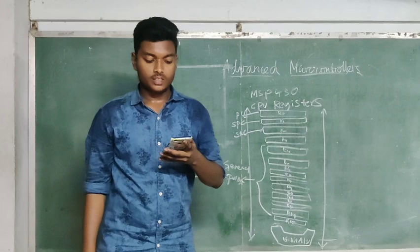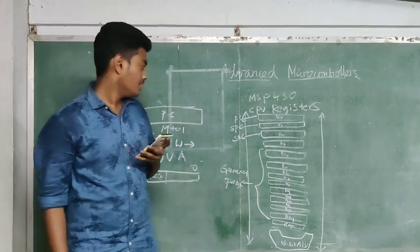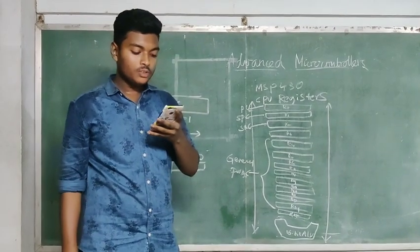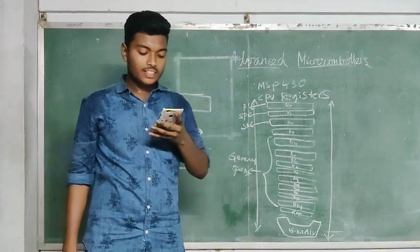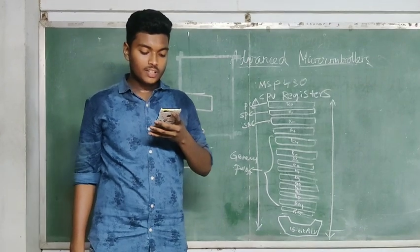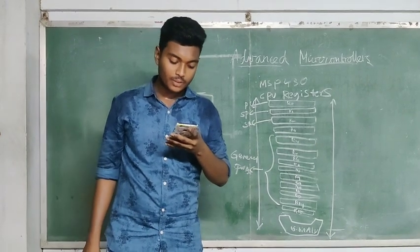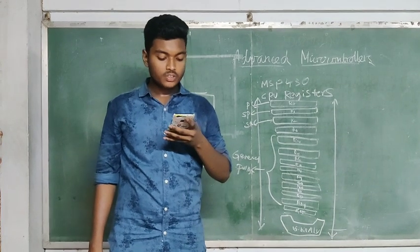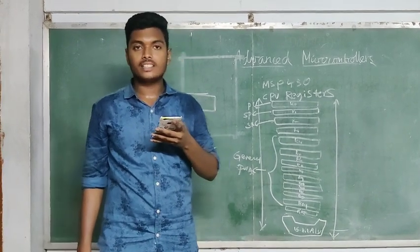Now, let us see about constant generator registers. There are mostly 6 commonly used constant generators with the registers R2 and R3 without requiring an additional 16-bit of program code.